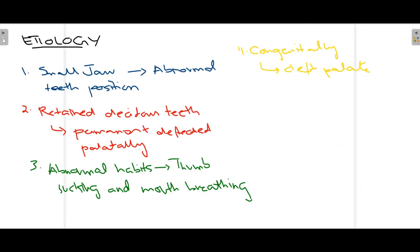Talking about the different etiologies that lead to crossbite — the most common is the size of your jaw. If your maxilla is small or your mandible is large, crossbite will occur because the positioning of the jaw has changed. This is the first and most common cause that can lead to crossbite.